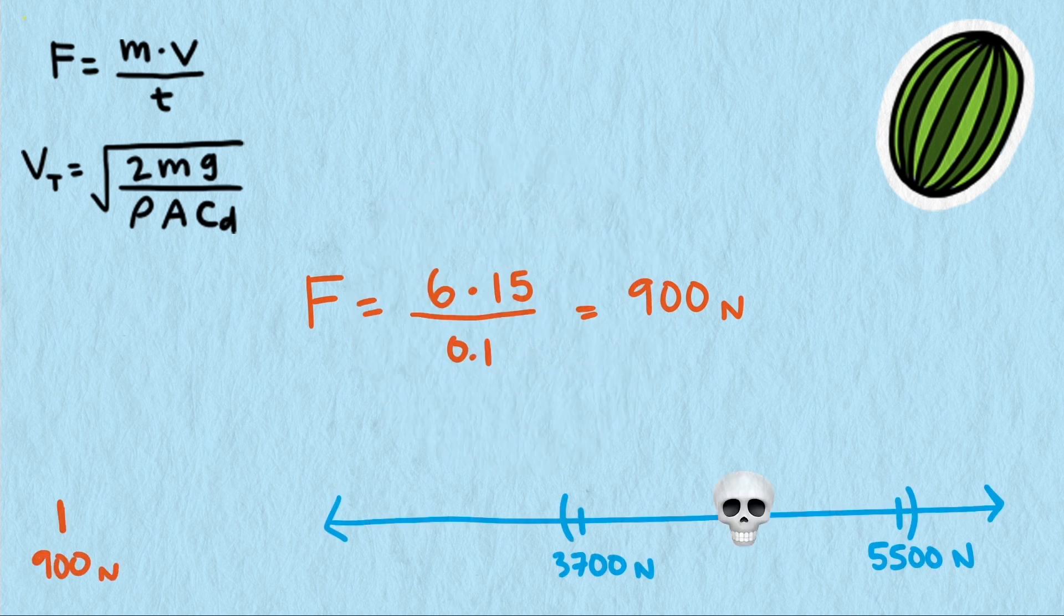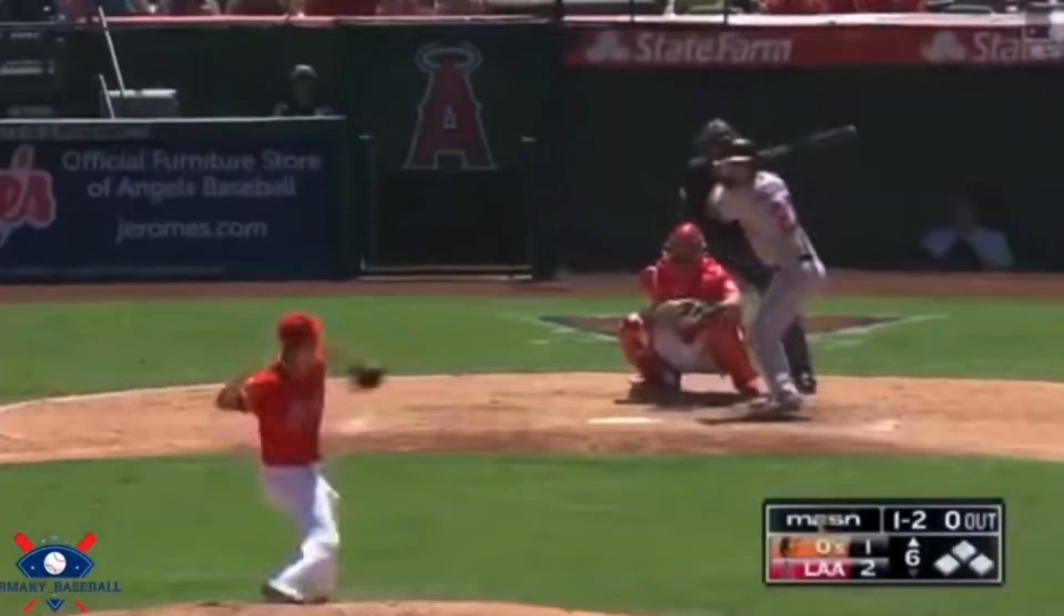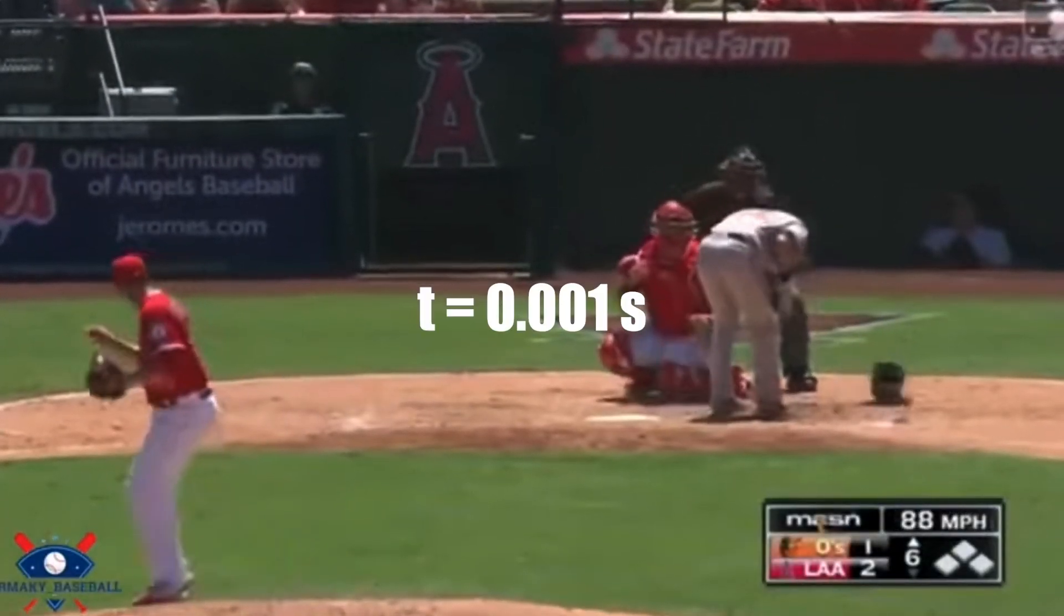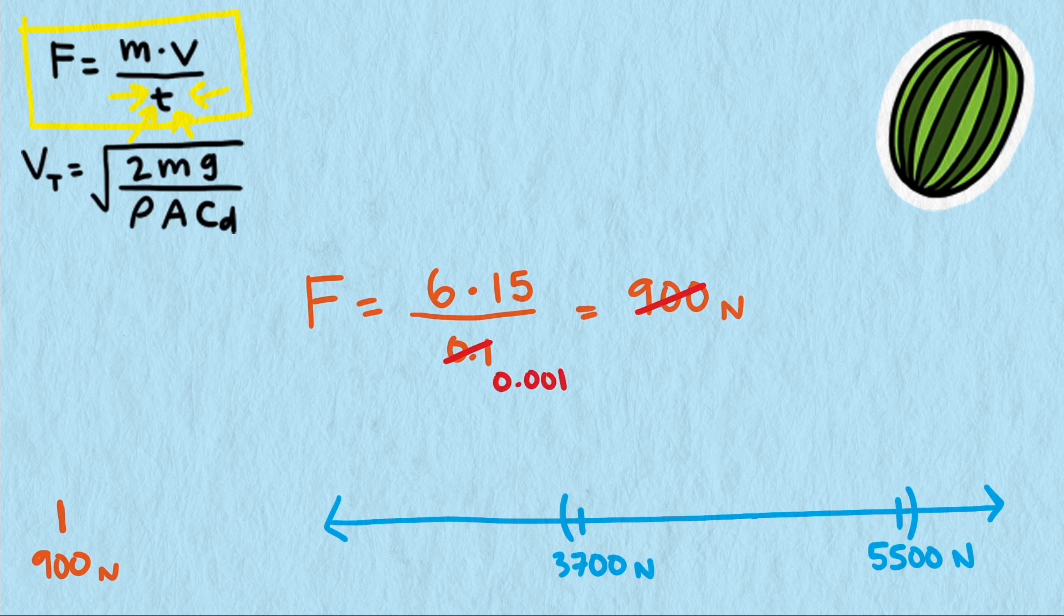This watermelon scenario actually points out a really important part of our impact force equation, contact time duration. If our watermelon behaved more like our baseball and remained in contact for only 0.001 seconds, we quickly go from 900 newtons to 90,000 newtons, a huge difference.